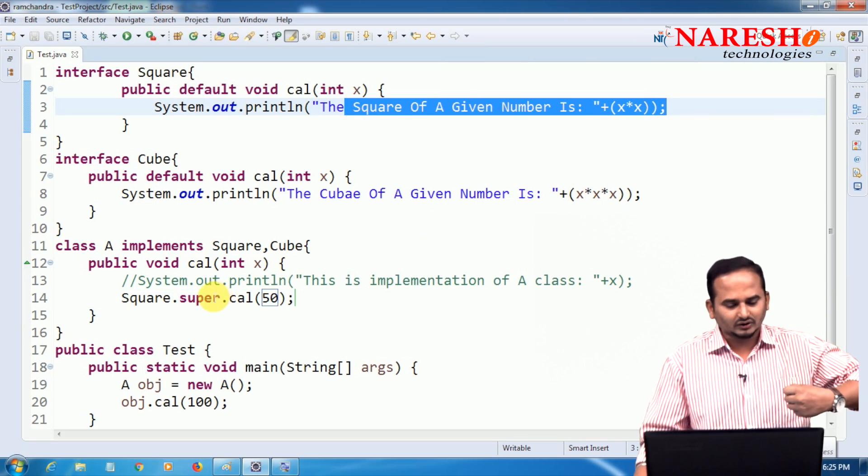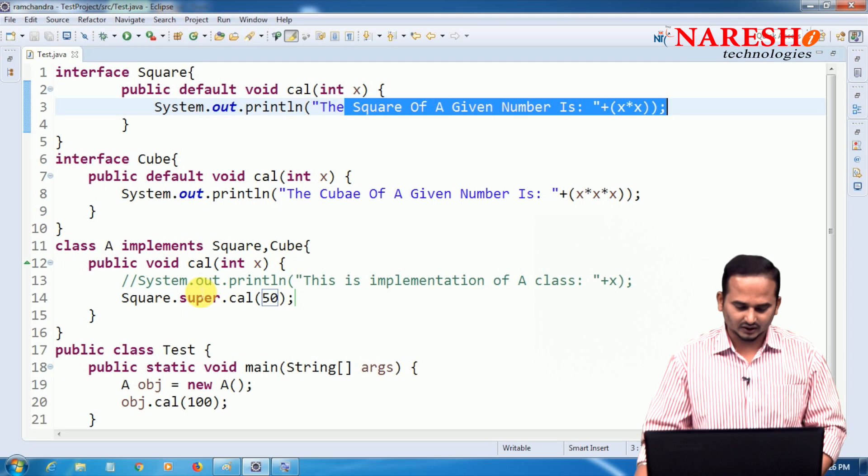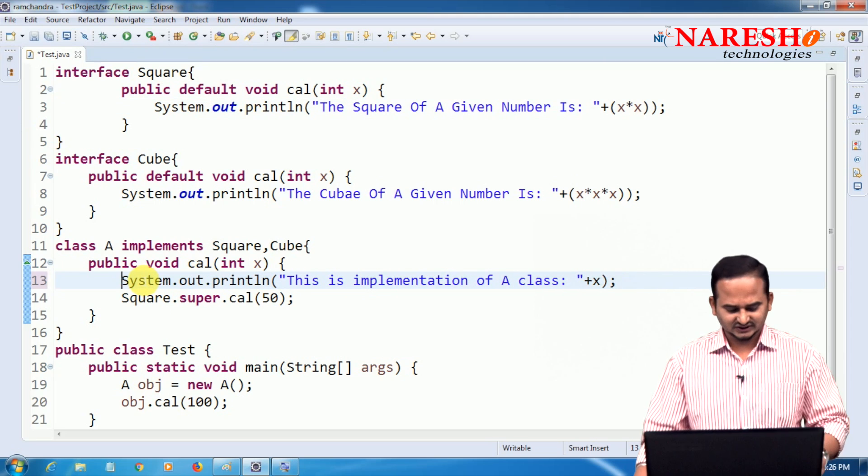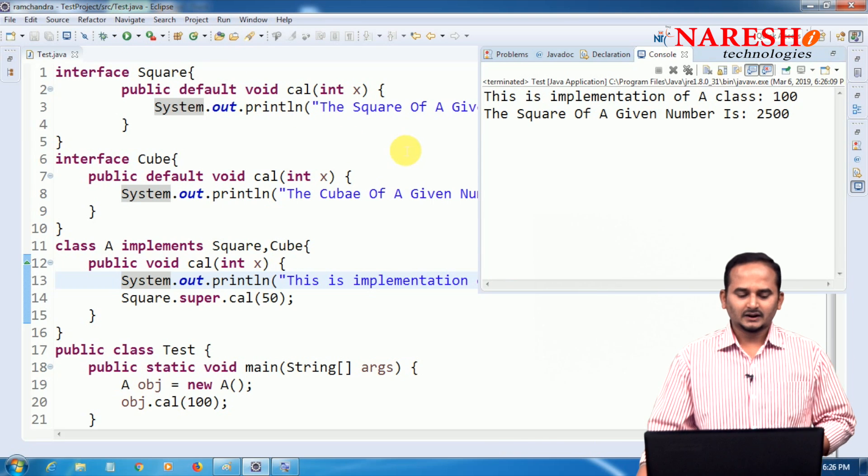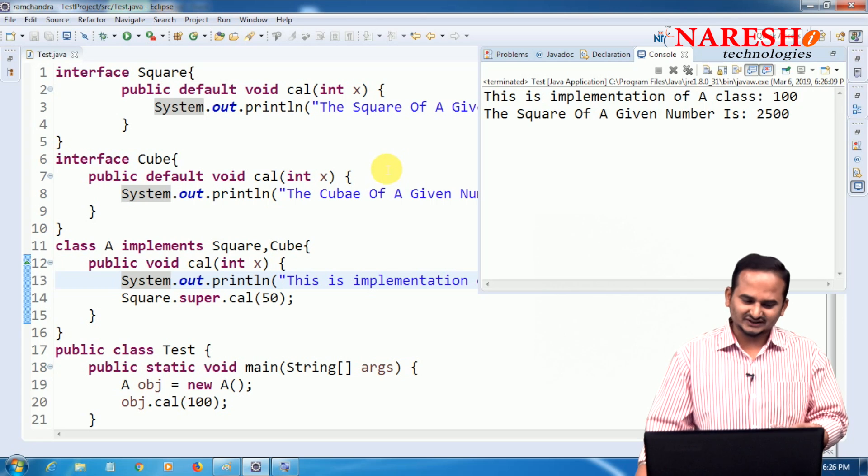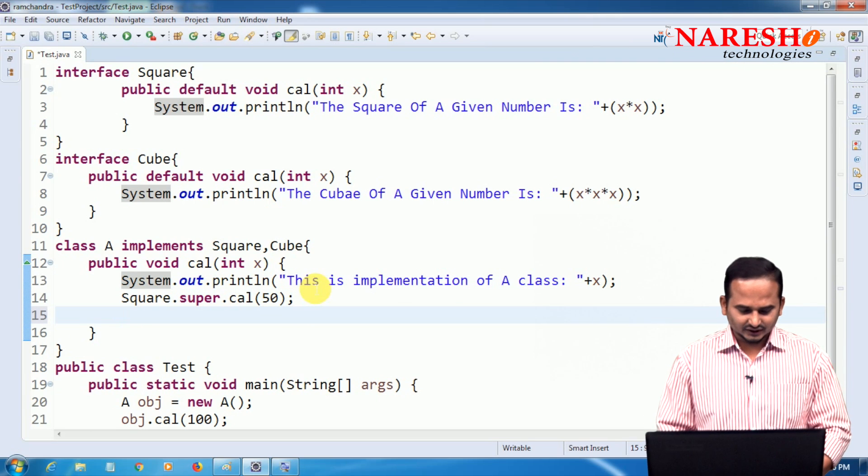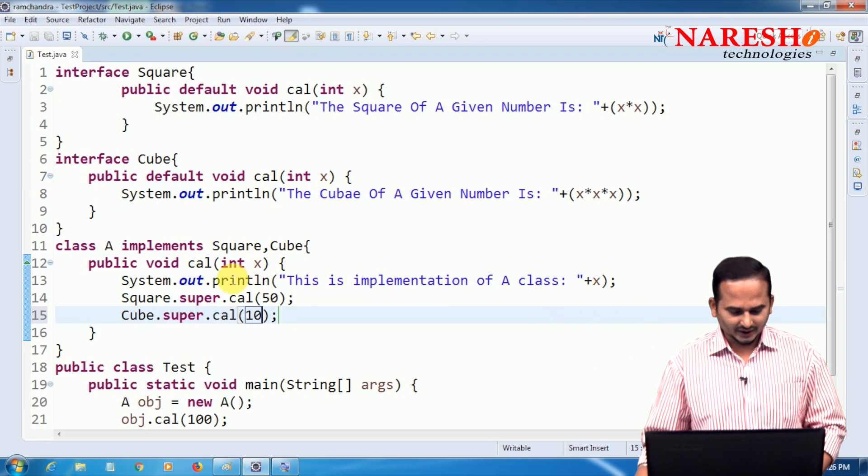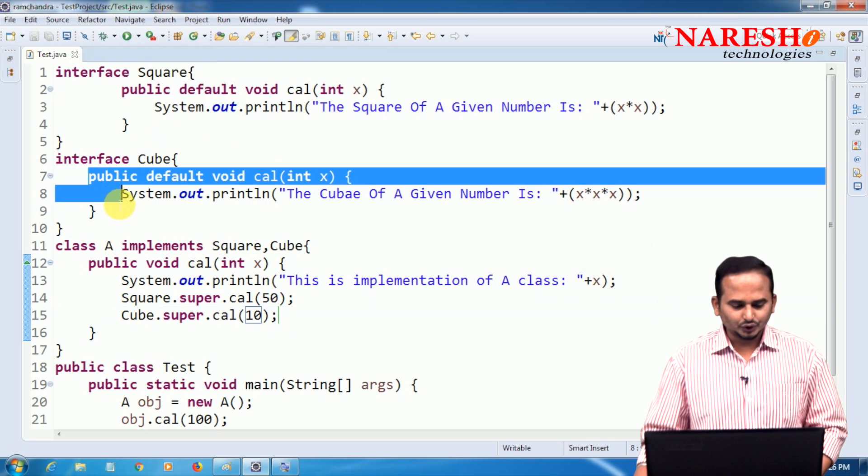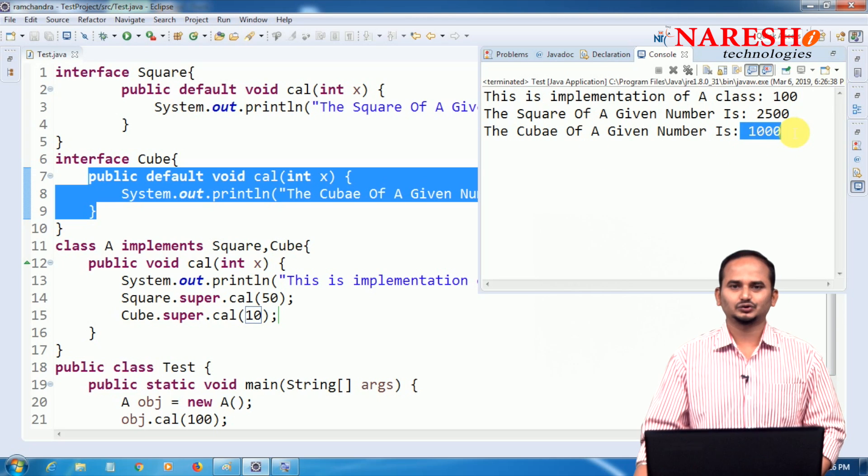So this statement is executing how? The control is going from A class cal method to square interface default method like cal. Now if you uncomment that first statement, you will get A class implementation as well as square interface default method implementations also. Now if you are calling like cube.super.cal of 10, then what happens? This will call cube interface cal method by passing 10. Now it will show 1000, 10 into 10 into 10.